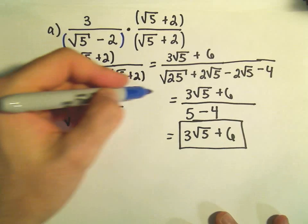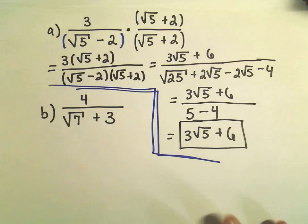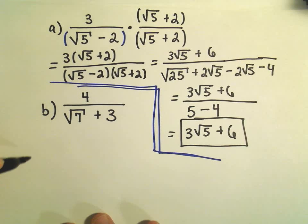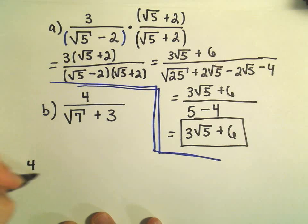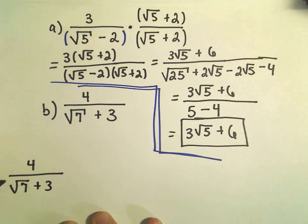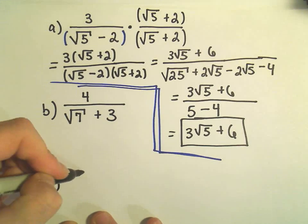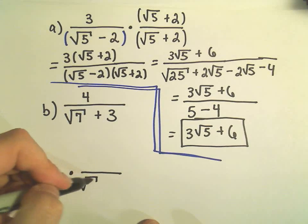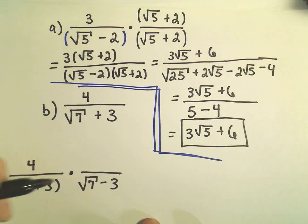Alright, so let's do our other example here. Let me break this up. I think it's going to run together. I'm just going to do the exact same trick here. I've got 4, I've got root 7 plus 3, and again, I'm just going to multiply by the conjugate. So in this case, it'll be the square root of 7 minus 3.